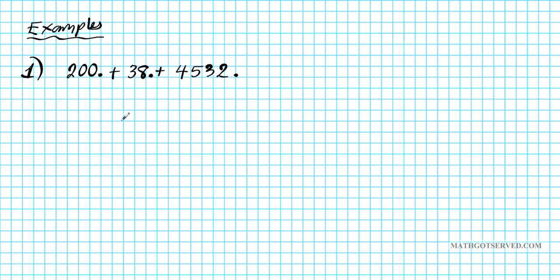So we're going to align it vertically. 200, put a decimal point there if you want. 38 and 4,532. All right, so you notice how I aligned the place values vertically.